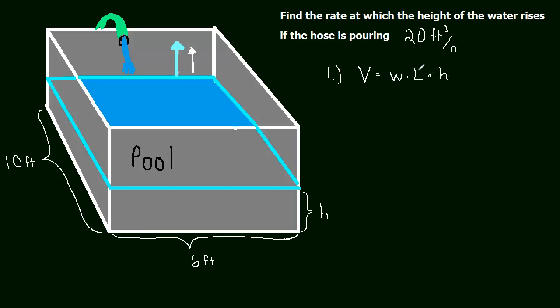And in this problem, width and length are given to us. So this is going to be equal to 6 feet times 10 feet times h, which of course is just 60h.